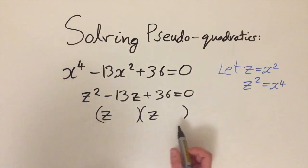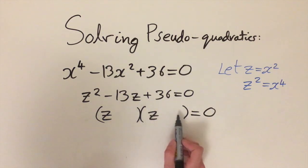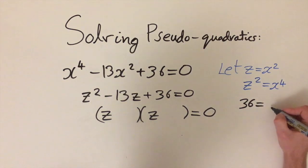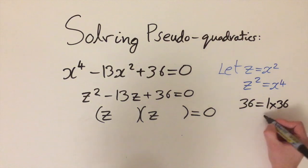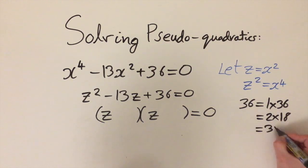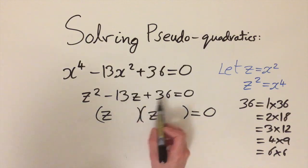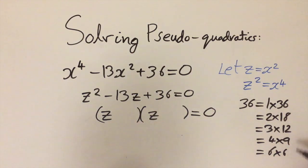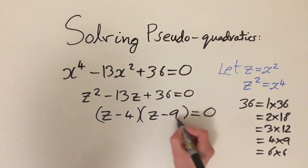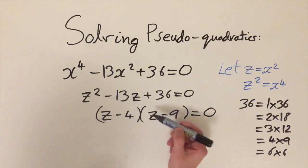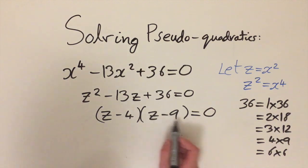We can factorize z squared minus 13z plus 36 directly as a product of two linear factors. We need two numbers that multiply to give 36 and add to give minus 13. Looking at factor pairs of 36: 1×36, 2×18, 3×12, 4×9, 6×6 — the pair that works is minus 4 and minus 9, since (−4)(−9) = 36 and −4 + (−9) = −13. So the factored form is (z − 4)(z − 9) = 0.